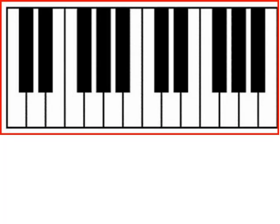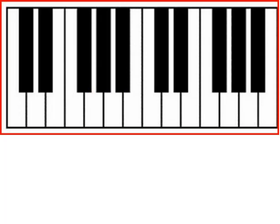You must understand the half steps and whole steps on the keyboard and how to get around it. However you decide to figure out what note you're on, it doesn't matter. I use the two black notes and the three black notes. The note right before the two black notes is a C, and the note right before the three black notes is an F. However you decide to do that is fine — you do have to be able to get around and understand the keyboard.